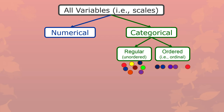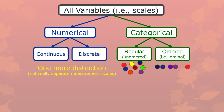So we've got this system: all variables can be divided into categorical — which is either regular or ordered depending on which type — or numerical. We need one more distinction, and it's not as important because it's still numerical, not a different kind of information. But it is important to pay attention to. You need to know whether a numerical scale is continuous or discrete — sometimes you don't need to know that, but sometimes you really do.